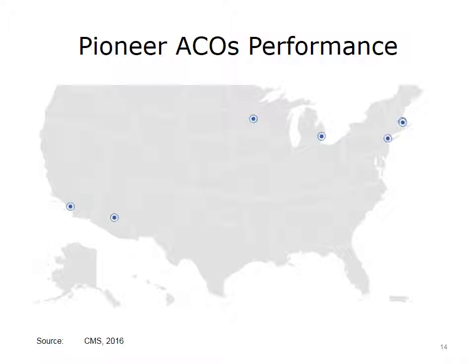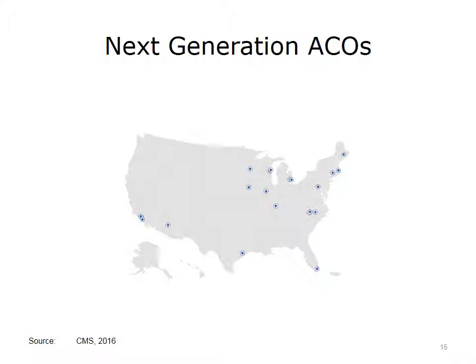The Pioneer ACO model was first introduced in 2012. Initially nationwide, there were 32 applicants for the Pioneer ACO program. In 2016, nine of the initial 32 remain. The savings so far have been small—specifically, these organizations have saved 0.02% of the Medicare budget. Next Generation ACOs are based on the rules for ACOs emerging as of 2016. There are 21 ACOs participating in this model. As the model is new, performance results are not yet available. However, some of the differences with this model may drive future performance.